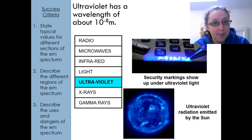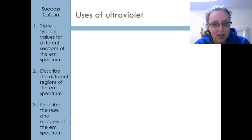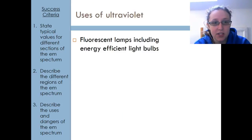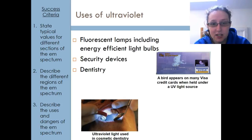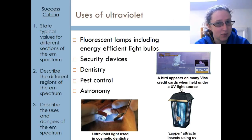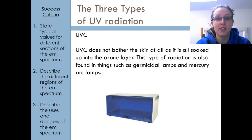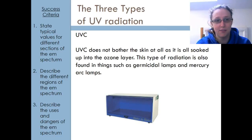Next up we've got UV. UV has a wavelength of about 10 to the minus 8 meters. Uses include fluorescent lamps, security devices, dentistry, pest control, and astronomy. We also need to talk about the fact that there are three different types of UV radiation that we need to know about.